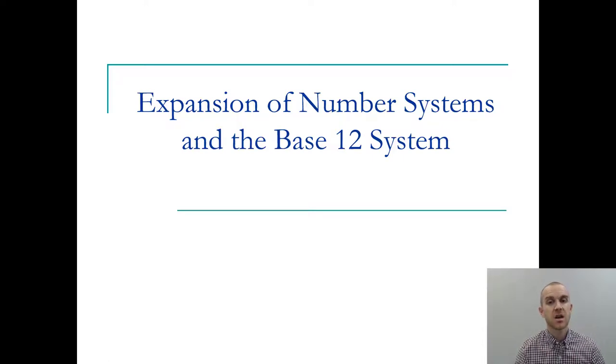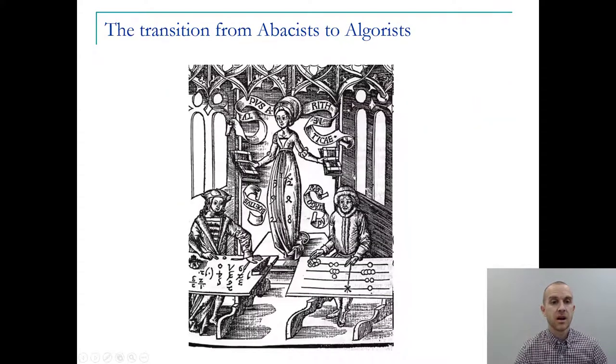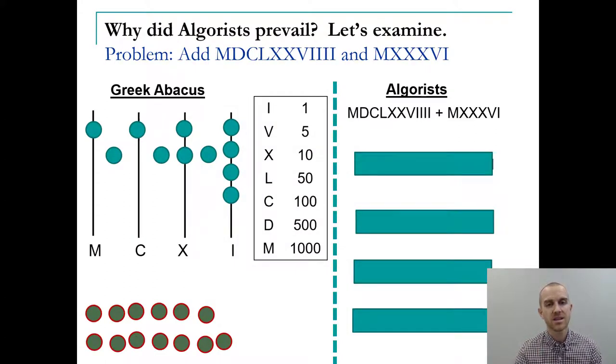In this video, we'll discuss some extended concepts of number systems as well as the base 12 system. As we go through time we see a transition from abacus people that are using stones to help mark numbers to Algorists who are actually writing down numerals and recording their solutions. There's multiple reasons for this, both speed, efficiency, and a record of the operations and calculations that are being done. Let's compare the two and see why the algorists become so much more prevalent in our system.